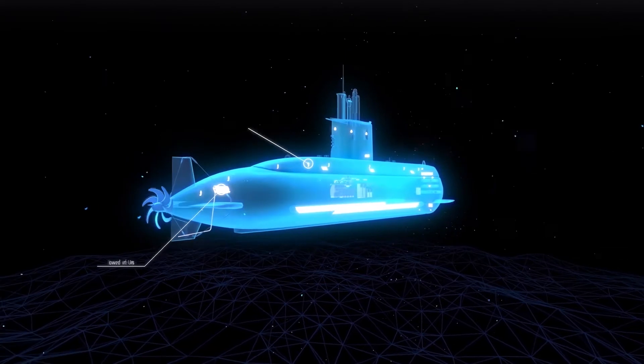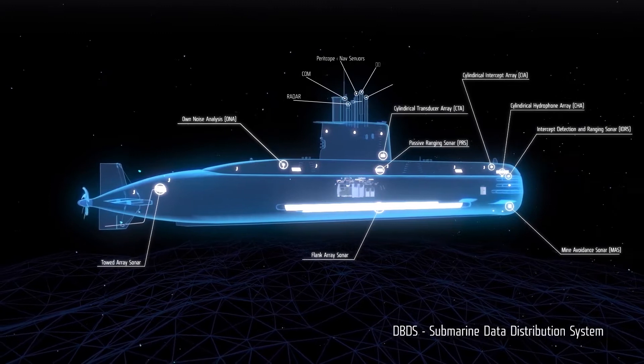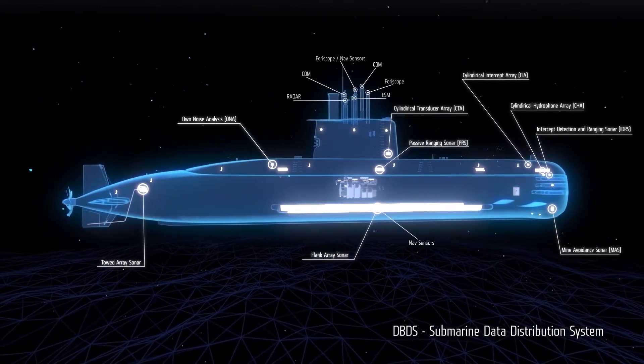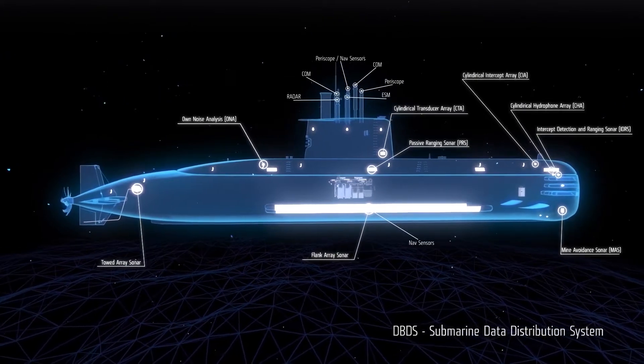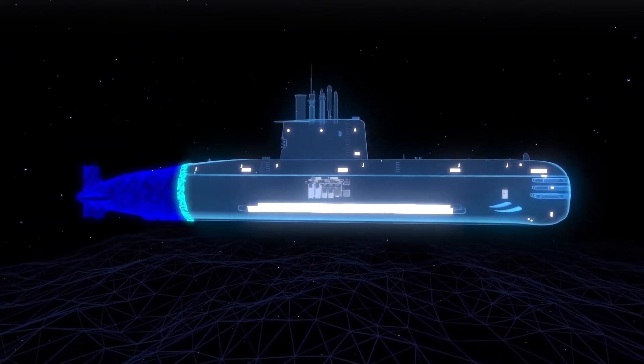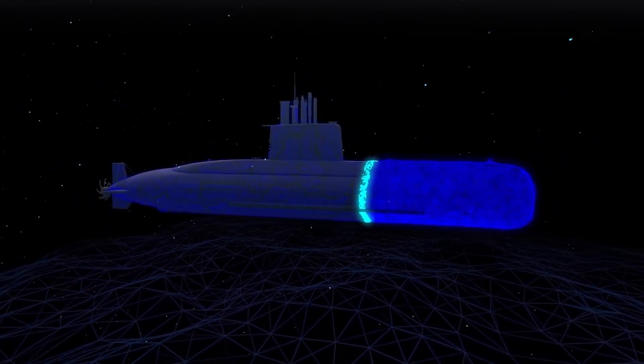Similar to a human nervous system, DBDS, the submarine data distribution system, collects data from non-acoustic and navigation sensors and distributes it to related systems in a compatible format. DBDS is redundant, reliable and accurate.